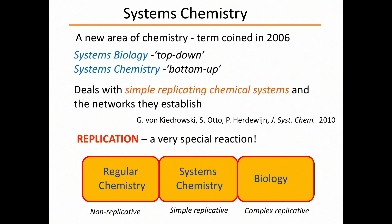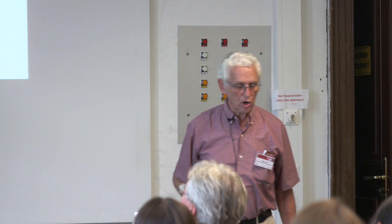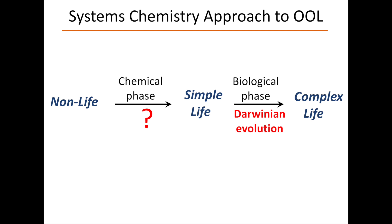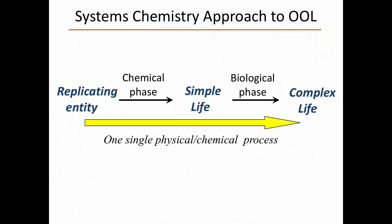What does this systems chemistry approach tell us about the origin of life? Replication is a very important, very special reaction. Regular chemistry deals with non-replicative systems — A being transformed into B or C. Biology is about complex replicative systems. And systems chemistry attempts to bridge between these two worlds by looking at simple replicative systems, thereby connecting regular chemistry to biology. Something very important in all of that is replication, and there is something we call dynamic kinetic stability.